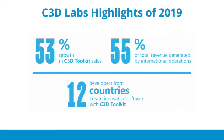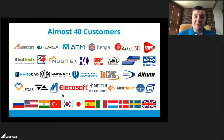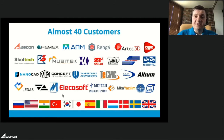Last year we grew more than 50% in C3D Toolkit sales — two years in a row. As a Russian company, it's very important that more than 50% of our total revenue is generated by international operations. Developers working with C3D Toolkit come from 12 different countries, and we have almost 40 customers developing systems for CAD, CAE, CAM, building information modeling, and other applications requiring accurate 3D models.